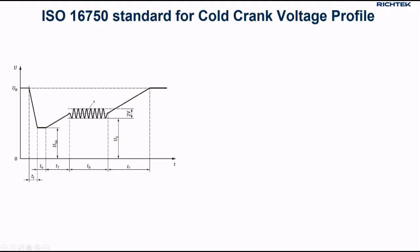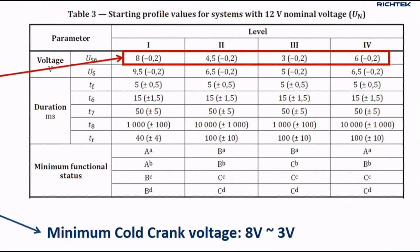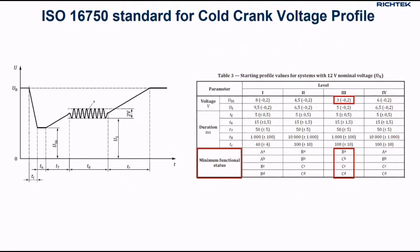For the pre-converter design, let's have a look at the requirements regarding cold crank voltage levels. The ISO 16750 standard defines cold crank voltage profiles. There are different levels defined, where the minimum voltage dip level can range from 8 volts down to 3 volts. At very deep cranking voltage dips, the functionality of the device may be temporarily inhibited.